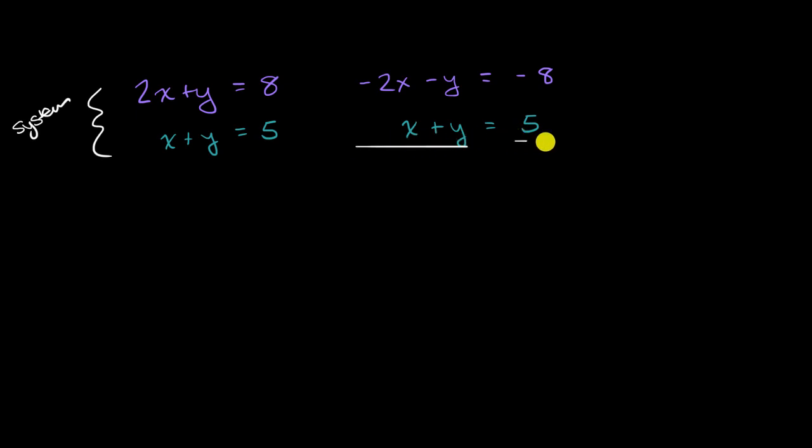And so you might have seen something like this. When we add the two left sides, let's see, -2x + x would be -x, and then -y + y, well that's just going to cancel out, so we have no y's left, and then that's going to be equal to -8 + 5, which is equal to -3.